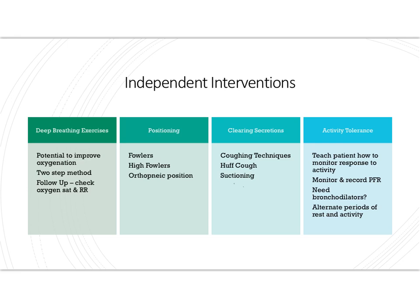Encourage the patient to perform diaphragmatic breathing 3 to 10 times depending on what they are experiencing. For clearing secretions, teach coughing techniques. For instance, with COPD patients we teach the huff cough — forced coughing at the end of expiration. Encourage the patient to sit up, breathe out slowly and completely, take a slow deep breath, hold it for a couple of seconds, tighten abdominal muscles, force air out quickly, and then cough at the end of forced exhalation. Repeat 3 to 4 times to help loosen secretions.